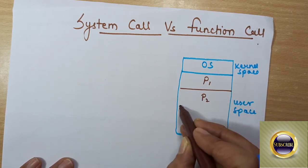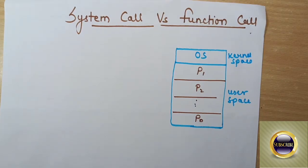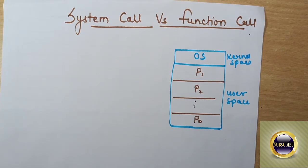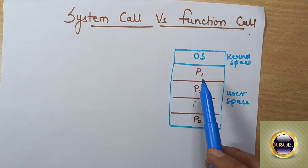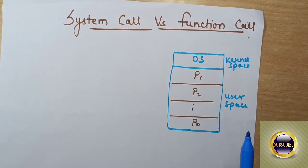All the processes are loaded into this user space, so we have multiple processes here like process P1, P2, and so on. Every process has its own process address space where it stores all of its instructions and code.